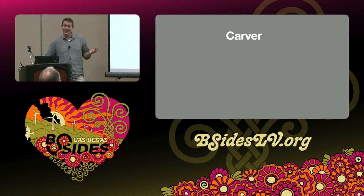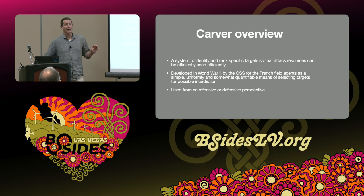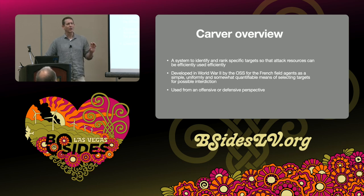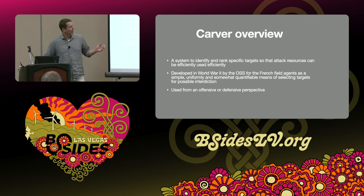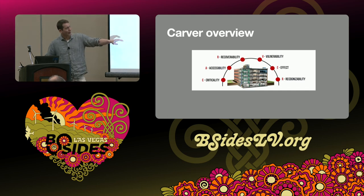So who was Conti? They're gone now — rebranded into other groups. The methodology I used once I had the data was the Carver method, from the OSS — the Office of Special Services — in World War II. It's what we taught the French: how to identify key points for sabotage. Since this is going on YouTube, I won't walk through the full sabotage application, but the framework is offense or defense to find the weak point. The letters stand for: Criticality, Accessibility, Recoverability, Vulnerability, Effect, and Recognizability.